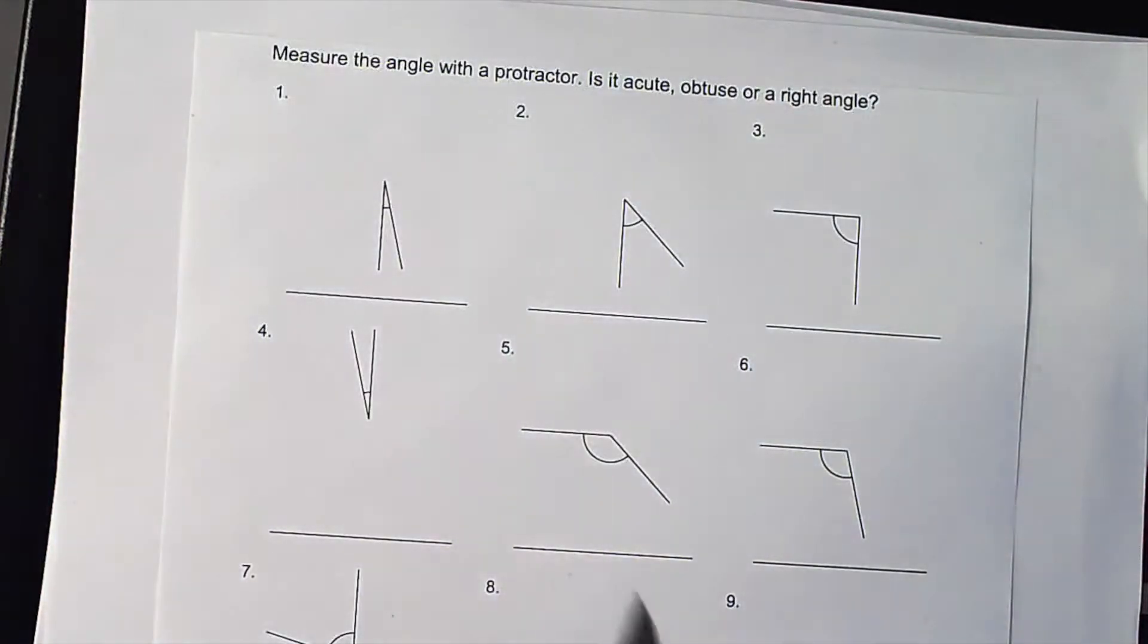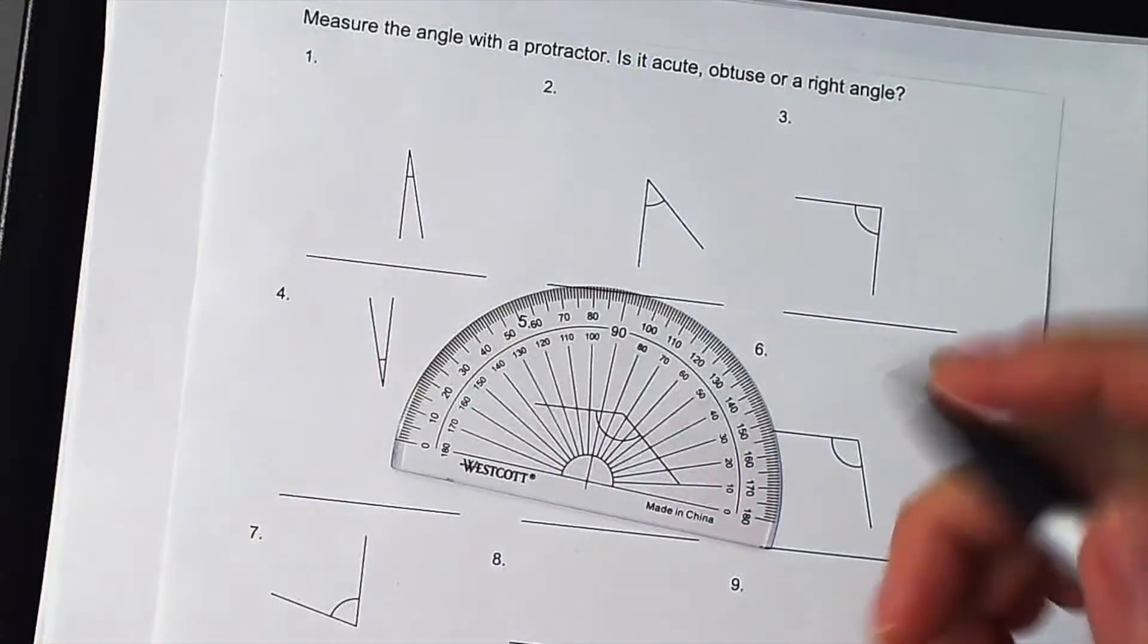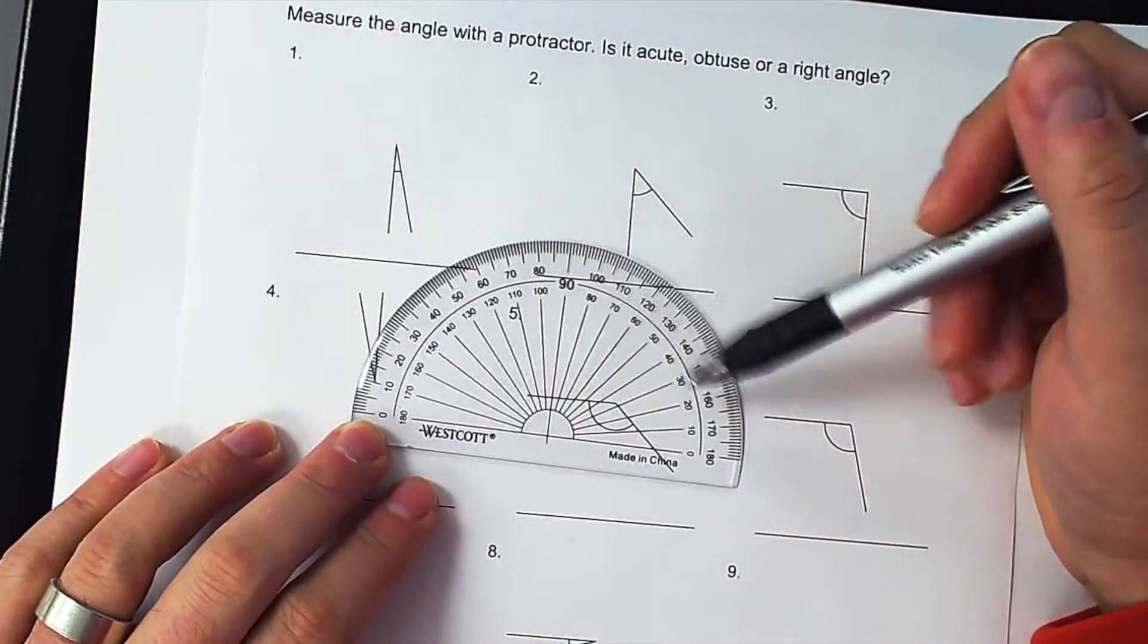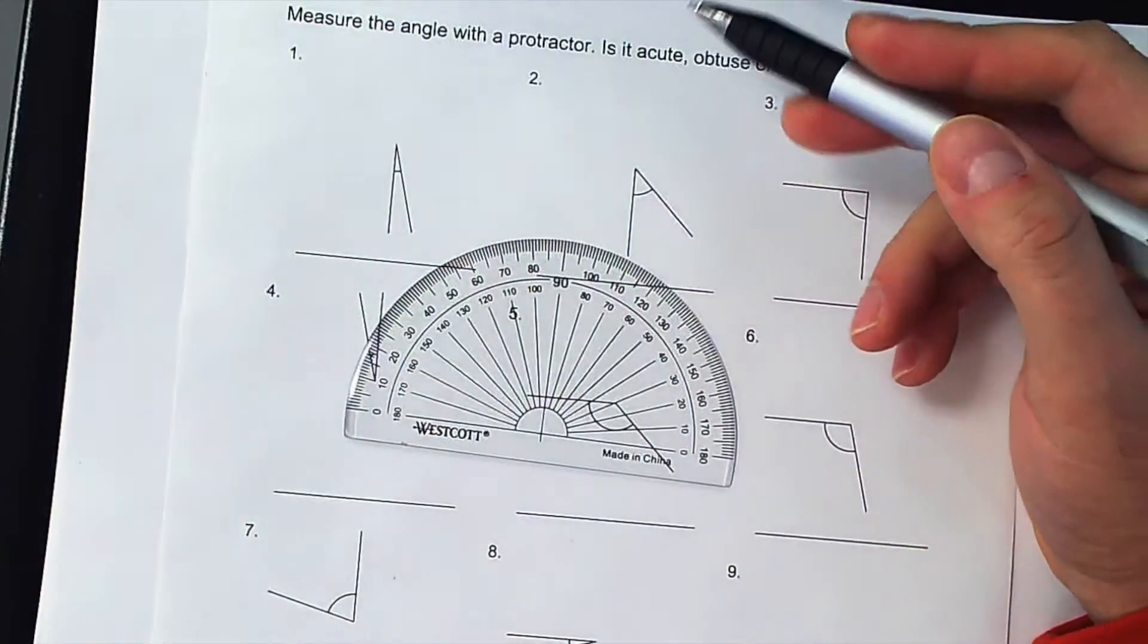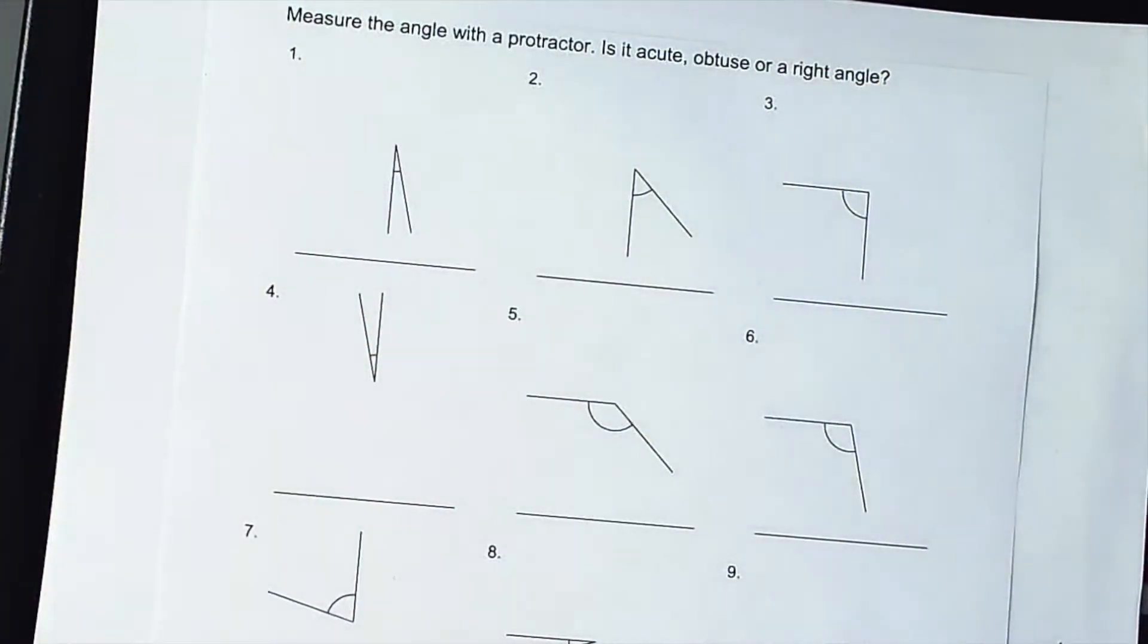Today we're going to learn about measuring angles with a protractor. Here's a protractor. The protractor gets confusing for some students because there's numbers on the outside and on the inside. I'm going to go over some tricks today that'll help you with that.